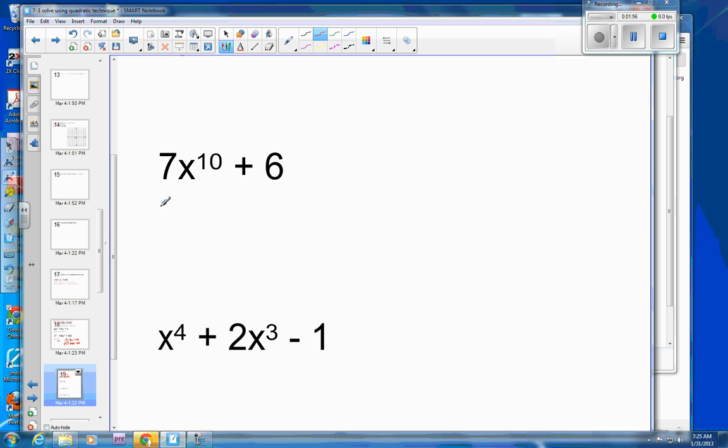This one? Yep, it can still be written in quadratic form. So this would be 7 times x to the fifth squared, and then basically this is 0 times x to the fifth, which you don't have to write this part, and then plus 6. And now it's in quadratic form, you could use the quadratic formula on that.